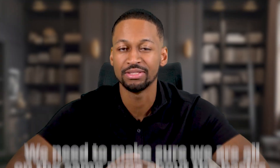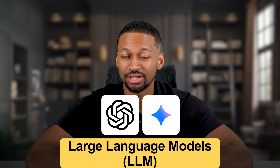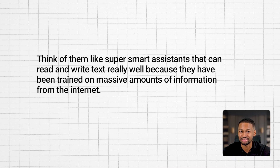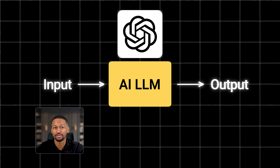Before we can understand AI agents, we need to make sure we are all on the same page about the basics. Popular AI tools like ChatGPT and Google Gemini are built on something called large language models, or LLMs for short. Think of them like super smart assistants that can read and write text really well because they have been trained on massive amounts of information from the internet. You give an input by typing something into the chat box, and the AI looks at what you wrote and gives you an output based on everything it learned during its training.